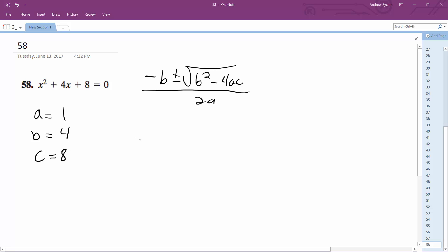Opposite of b, so negative 4 plus or minus square root of b squared which is 16. Four squared is 16, minus 4 times 1 times 8, all over 2a which is 2 times 1.